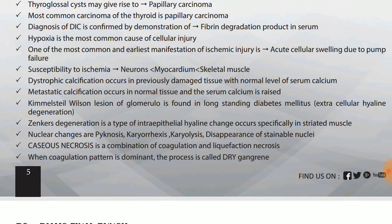Kimmelstein-Wilson lesion of glomerulus is found in long-standing diabetes mellitus, due to extracellular hyaline degeneration. Zenker's degeneration is a type of intra-epithelial hyaline change that occurs specifically in striated muscle — it is an intracellular hyaline change. Nuclear changes are pyknosis, karyorrhexis, karyolysis and disappearance of stainable nuclei.